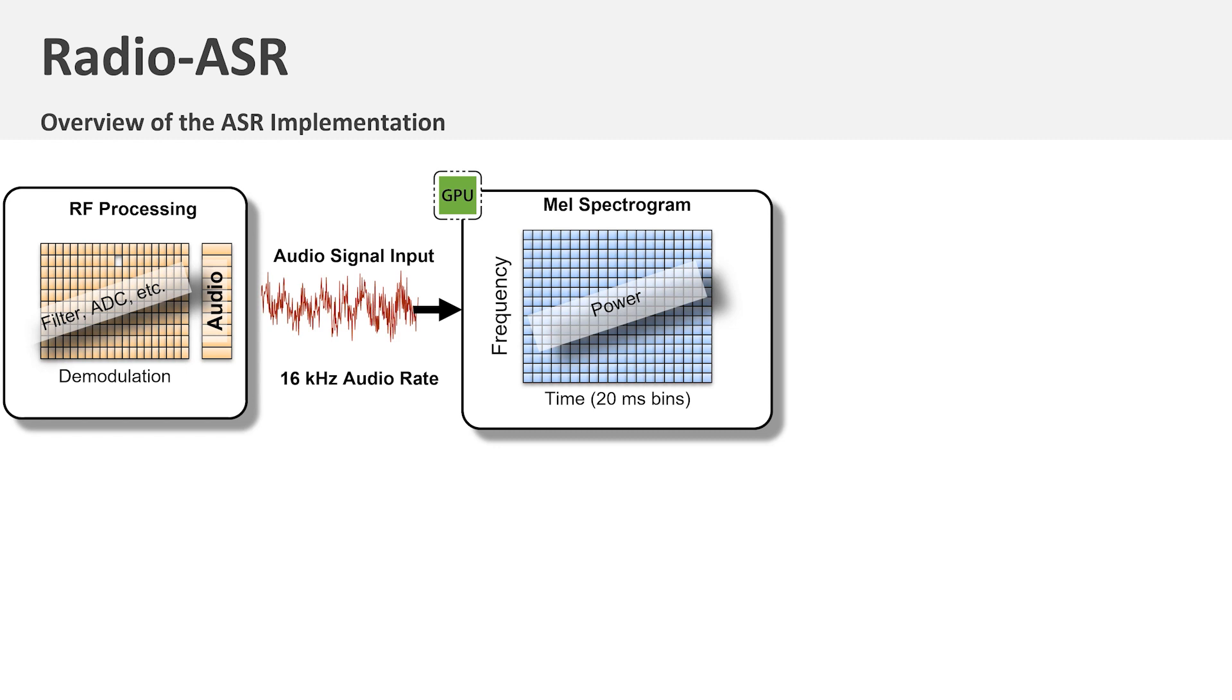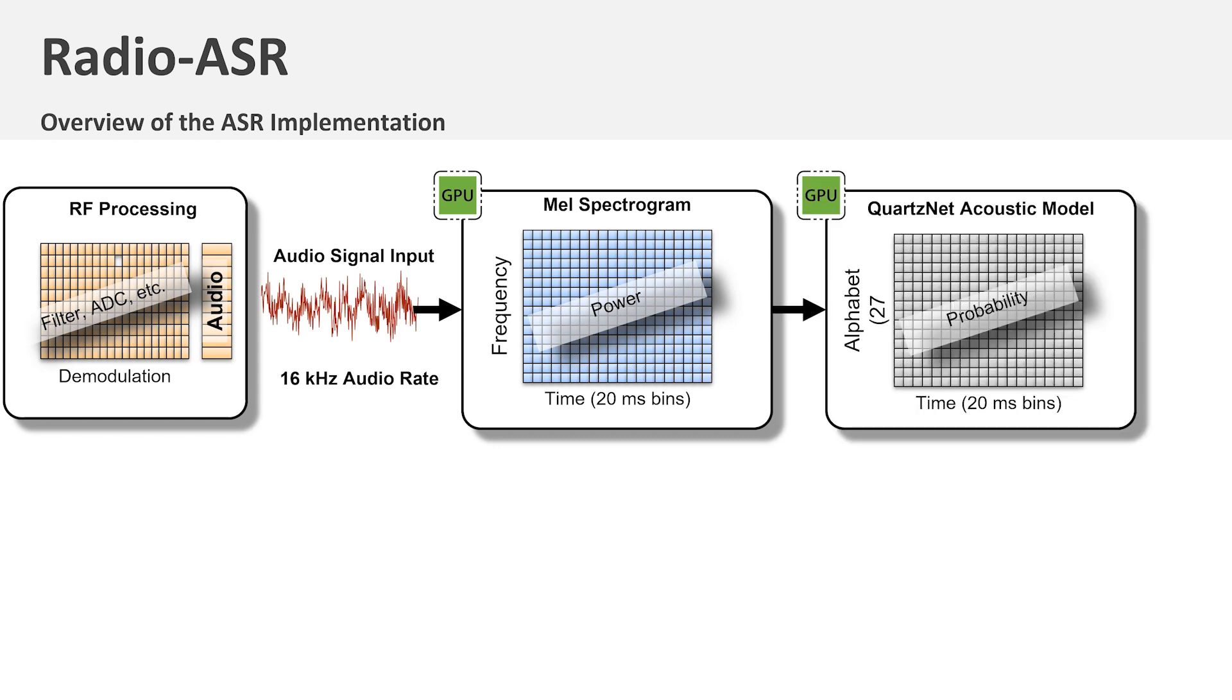The MEL spectrogram is the input to the QuartzNet acoustic model, a neural network that maps the spectrogram to phonemes and characters. The QuartzNet model is available from NVIDIA as part of the NEMO framework.